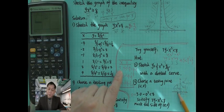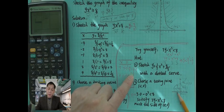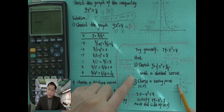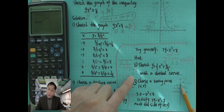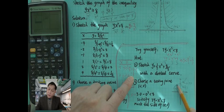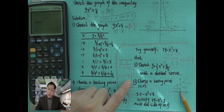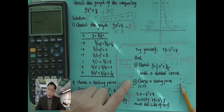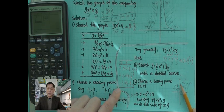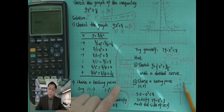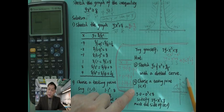So, negative 1, 7 thirds is roughly here. X is negative 1, Y is 7 thirds. 7 thirds is like 2 and 1 third. Then X is 0, you have 8 over 3. 8 over 3 is like 2 and 2 thirds, so it's right here. And when X equals 1, we have a 3. So 1, 3.